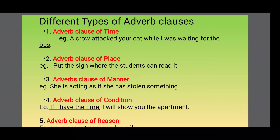You also have the adverb clause of degree, as in the sentence 'Ankita can sing better than her sister.' There is a degree of comparison — how can she sing? Better than her sister — making it an adverb clause of degree. These are the categorizations of clauses: the noun clause, the adjective clause or relative clause, and the adverb clause.